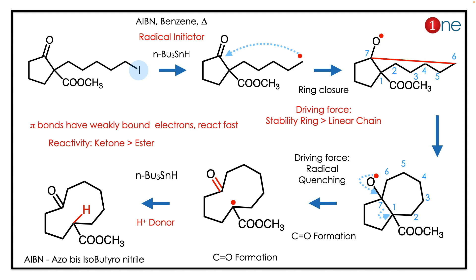After ring formation, there is again a radical at the oxygen. The radical is quenched — it forms a carbonyl and the ring is opened. The radical is then quenched by tributyltin hydride, which acts as a radical reducing agent.